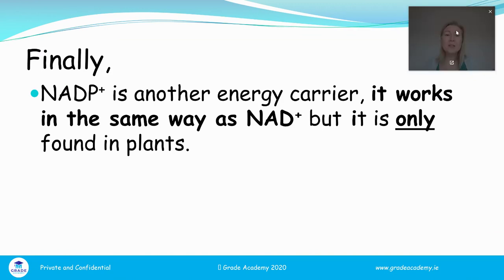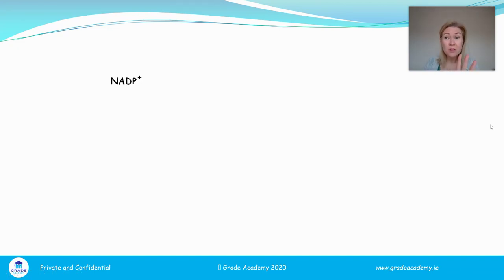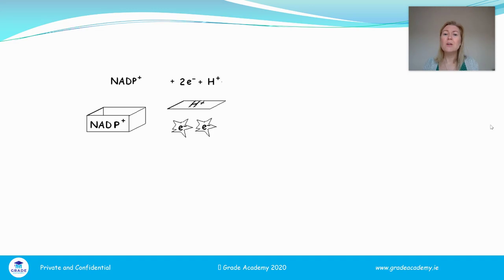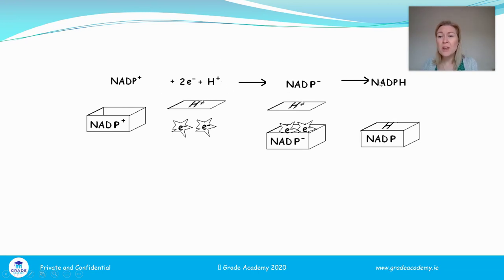Finally, NADP⁺ is another energy carrier that works exactly the same way as NAD⁺, but it's only found in plants. The difference is just the extra phosphate. NADP⁺ takes on its two high-energy electrons and an H⁺, and ends up becoming NADPH. So: NADP⁺ plus two high-energy electrons plus an H⁺ gives you NADPH.